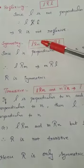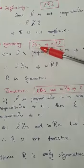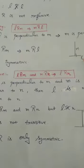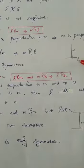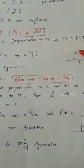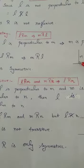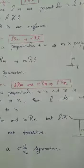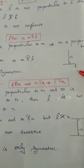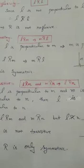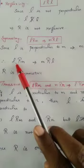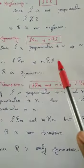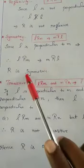Symmetricity. The definition is: L related to M implies M related to L. See the diagram — L is any line and M is another line, and these two lines are perpendicular. So L is perpendicular to M, and also M is perpendicular to L. Both sides are true. Therefore L related to M implies M related to L. Hence R is symmetric.